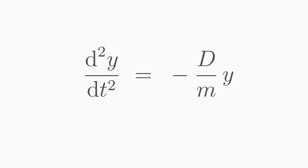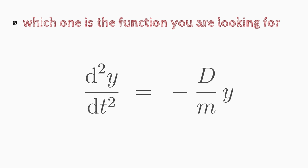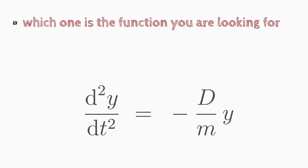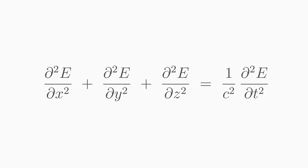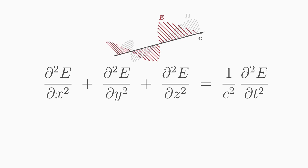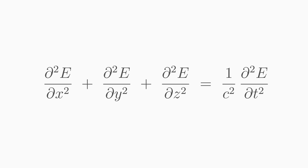Once you encounter a differential equation, the first thing you need to figure out is which one is the function you are looking for and which variables it depends on. In our differential equation of the oscillating mass, the function we are looking for is y and it depends on the variable t. As another example, look at the wave function describing the electric field of an electromagnetic wave propagating at the speed of light c. The searched function is e, and from the derivatives you can see that e must depend on x, y, z, and t — a total of four variables.